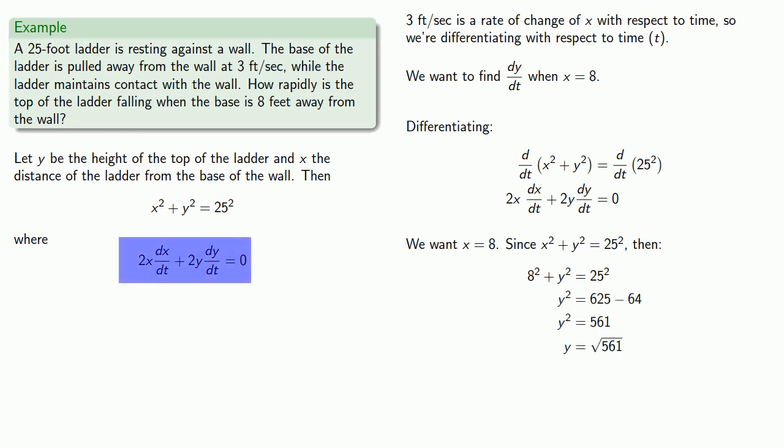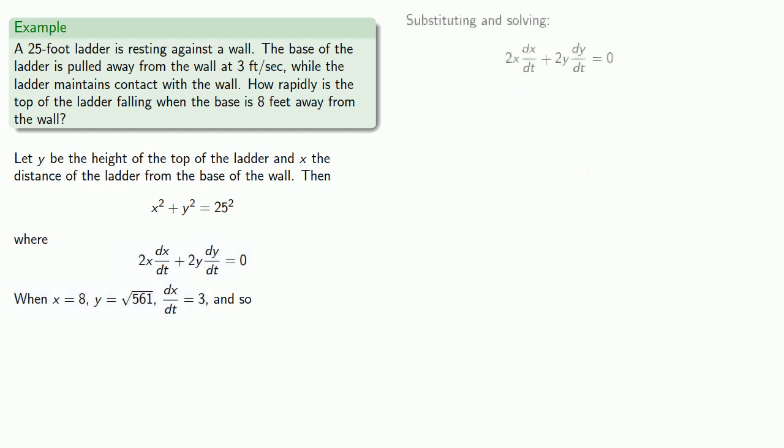So we have our derivative relationship, as well as x equals 8, y equals square root 561, and dx dt equals 3. So I'll substitute those into my equation and solve for dy dt.